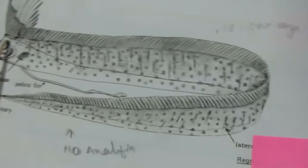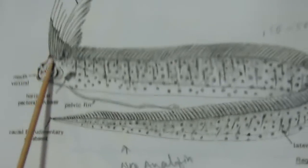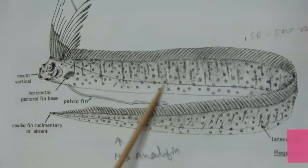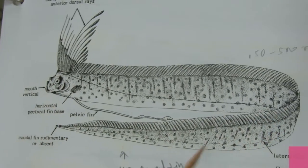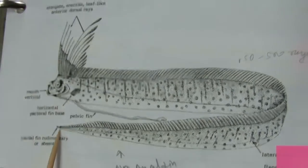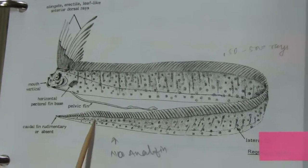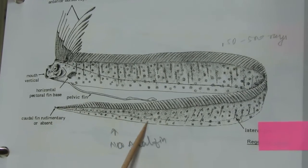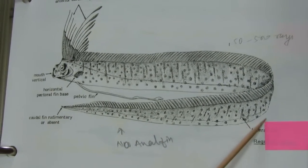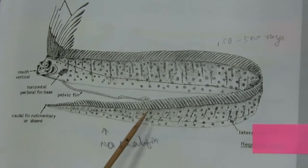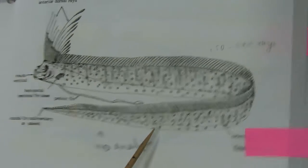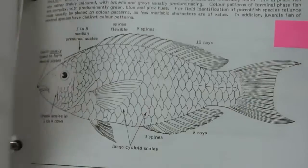Next is Regalecidae. The lateral line runs along the lower side of the body, consisting of a chain of oblong plaques loosely embedded in the skin or forming a continuous tube-like structure.